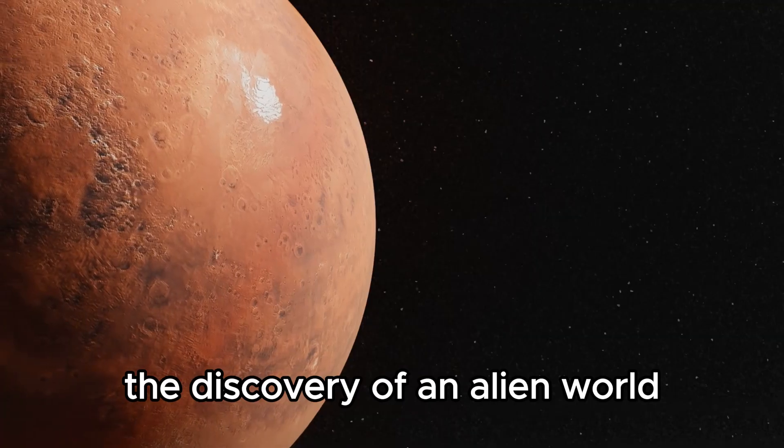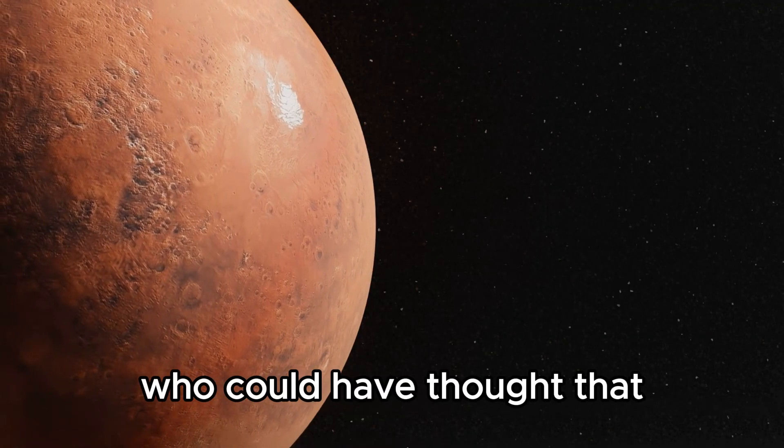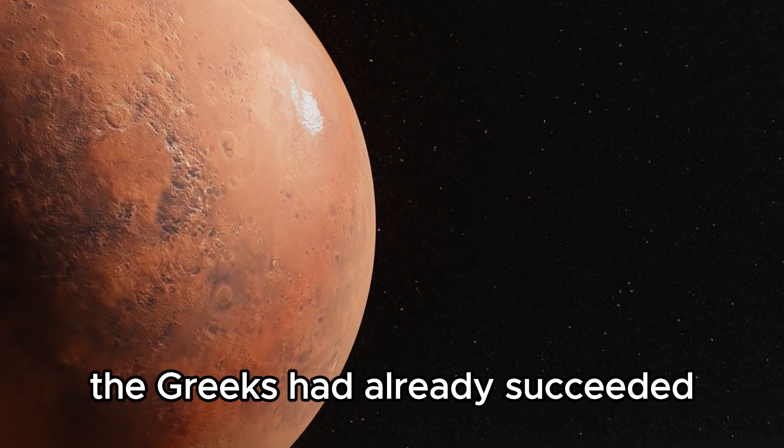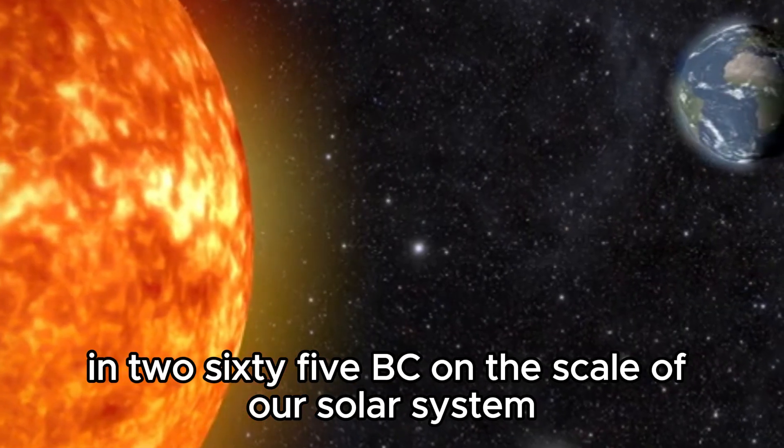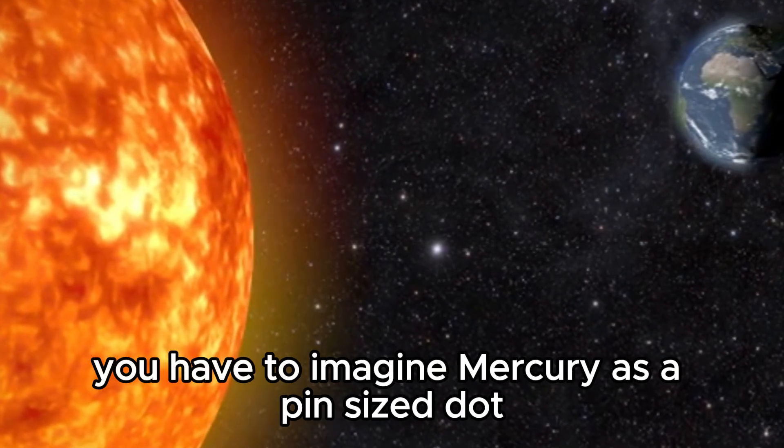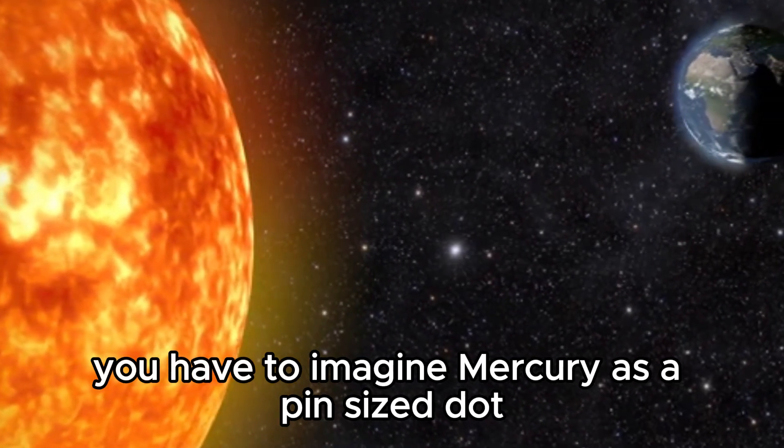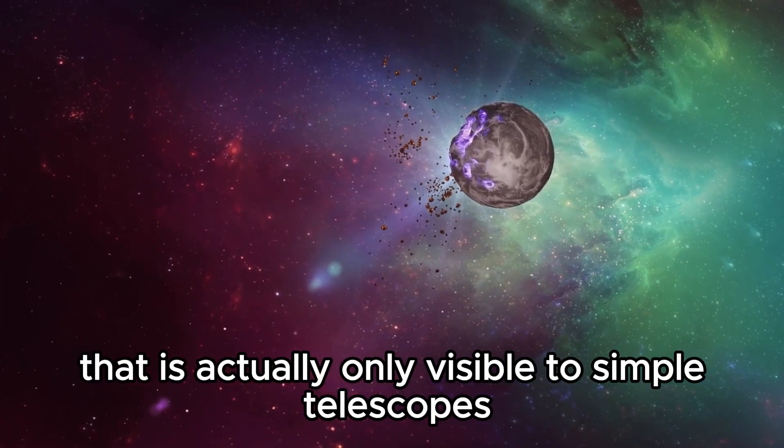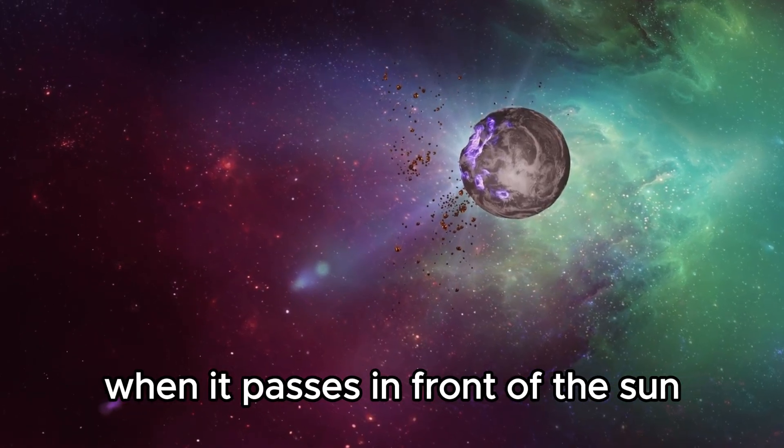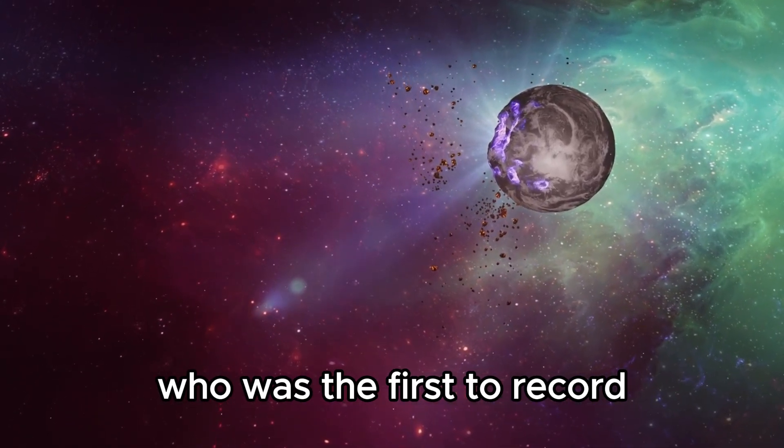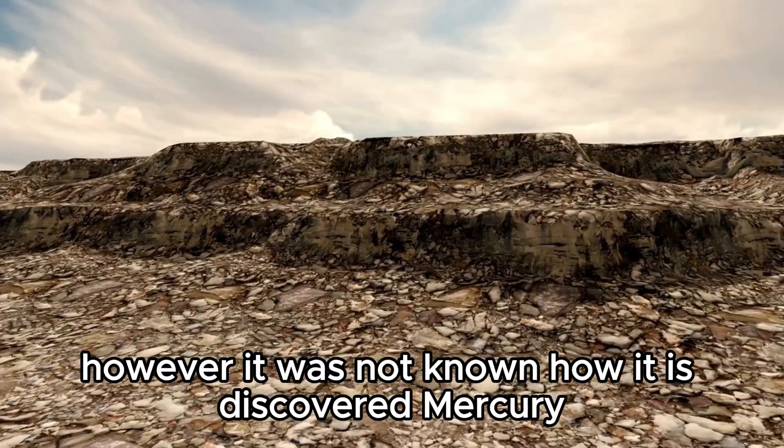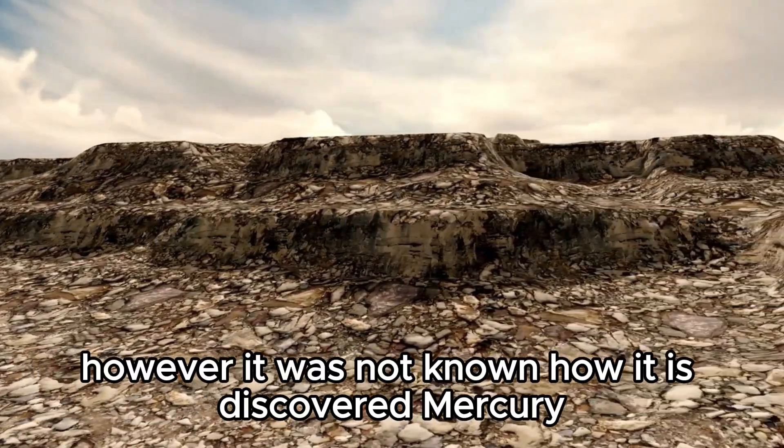The discovery of an alien world. Who could have thought that the Greeks had already succeeded in discovering this comparatively tiny world in 265 BC? On the scale of our solar system, you have to imagine Mercury as a pin-sized dot that is actually only visible to simple telescopes when it passes in front of the Sun. It was the Greek astronomer Timocharis who was the first to record the planet's position in the sky.